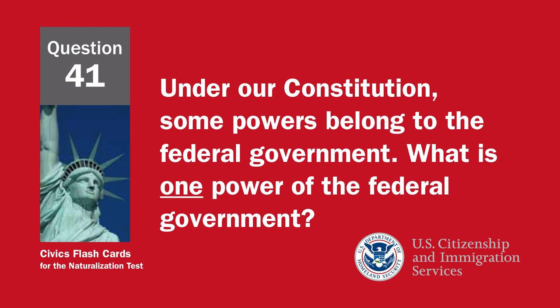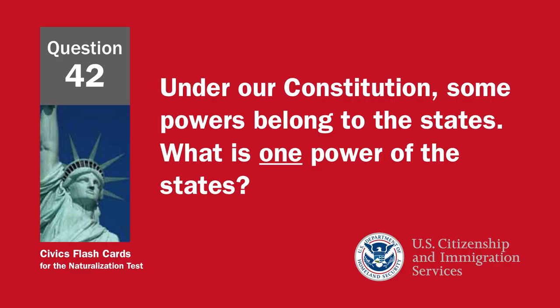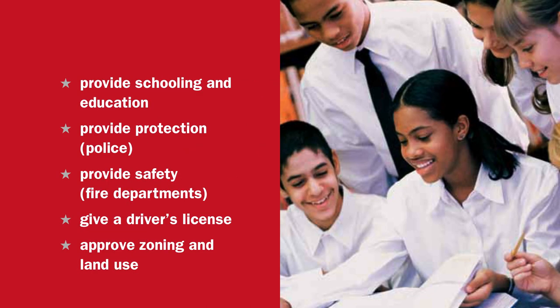Under our Constitution, some powers belong to the federal government. What is one power of the federal government? To print money, to declare war, to create an army, or to make treaties. Under our Constitution, some powers belong to the states. What is one power of the states? Provide schooling and education, provide protection, police, provide safety, fire departments, give a driver's license, or approve zoning and land use.